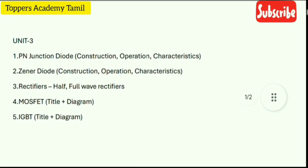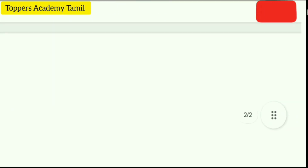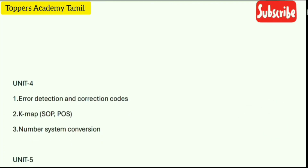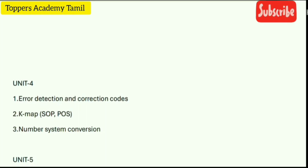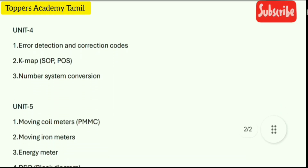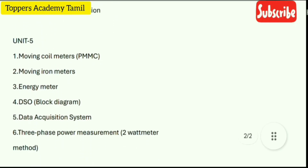We can do the maximum of the questions in Unit 3. Next, Unit 4 — let's look at the important questions. In Unit 4, you have three questions, so it's very easy to cover. First one: Error Detection and Correction Codes — theory-based questions. Second one: K-map — SOP and POS. Third one: Number System Conversion. We can see two marks in this number system conversion, so refer to the previous question paper as there are many different questions.